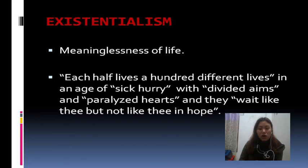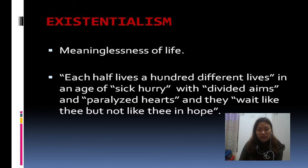These are features of existentialism. As taken from the poem: 'each half lives a hundred different lives' — the Victorian age is defined as an age of sick hurry, with divided ends and paralyzed hearts, and they wait in hope — or rather, hopelessness. All these are themes of existentialism that also make Arnold a precursor of modernism.